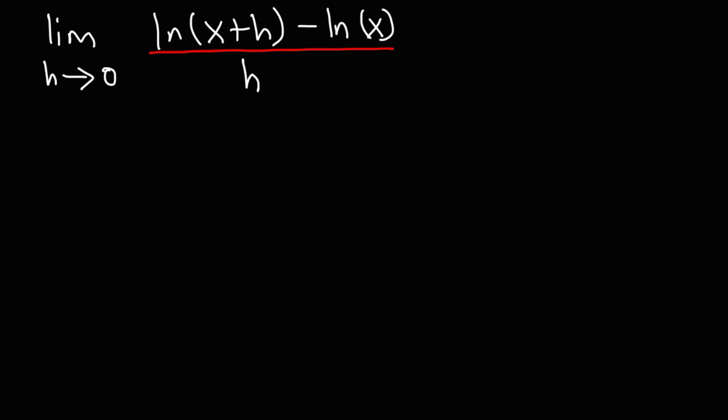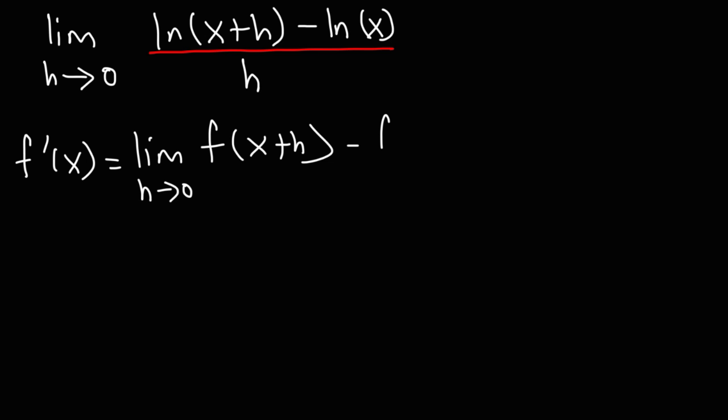What is the limit as h approaches 0 of the expression ln(x+h) minus ln(x) divided by h? How do you go about evaluating this limit? Well, the only thing you could do is recognize the formula this expression is associated with. That is the definition of the derivative: f prime of x is equal to the limit as h approaches 0 of f(x+h) minus f(x) over h.